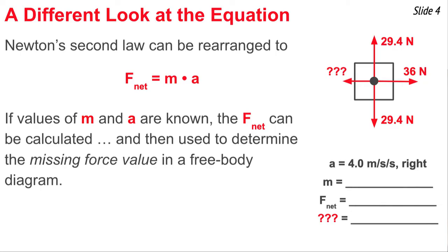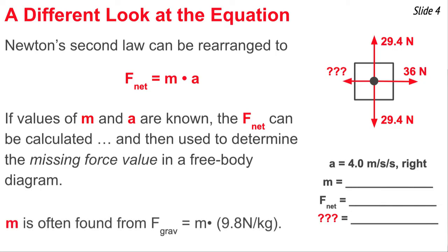In order to find the missing force, we first need to calculate the net force. We know the value of A, but we don't know the value of m. We can calculate m if we know the force of gravity. In the diagram, the force of gravity is 29.4 Newtons; dividing by 9.8 Newtons per kilogram gives 3 kilograms. Now knowing mass and acceleration, we use Newton's second law to calculate the net force: 12 Newtons to the right. This tells us the rightward force must be 12 Newtons more than the leftward force, so the leftward force must be 24 Newtons.